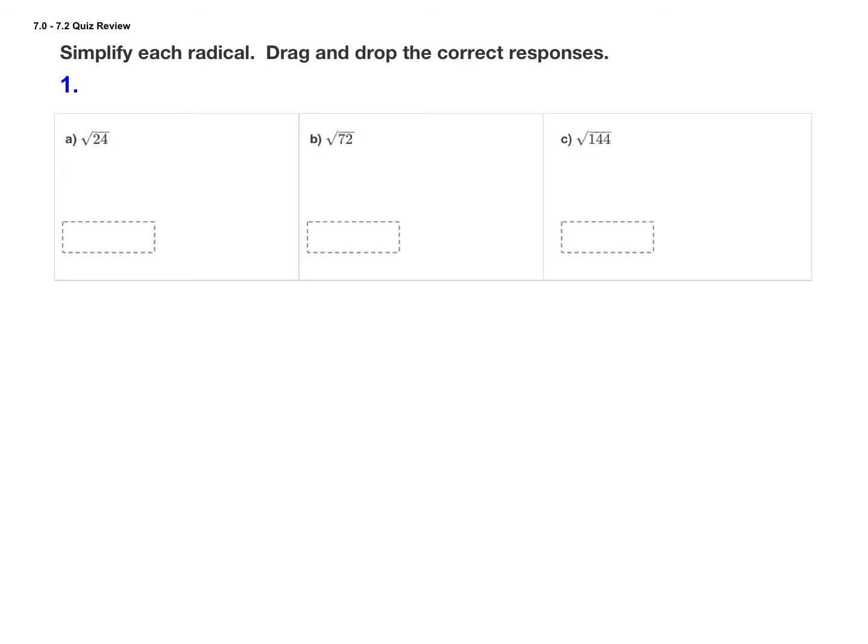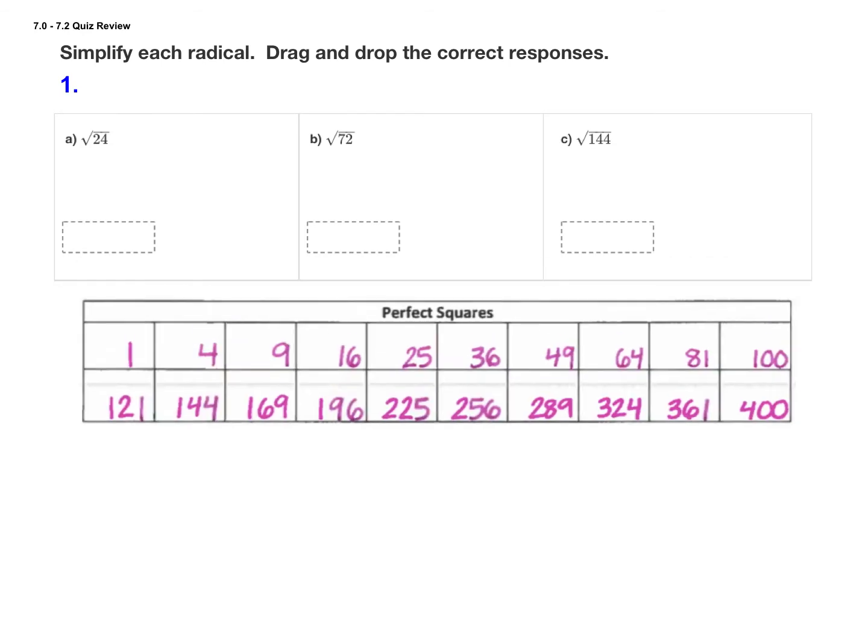Question number one comes from lesson 7.0 and asks us to simplify each radical. We learned the process for simplifying radicals back in 7.0 and it involves finding the largest perfect square that divides evenly into your radical.